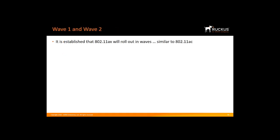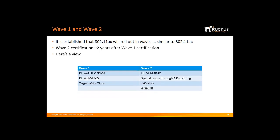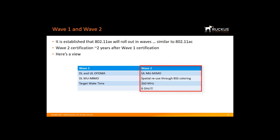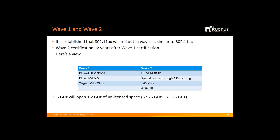802.11ax will roll out in waves similar to 802.11ac, with Wave 2 certification occurring 1–2 years after Wave 1. Wave 1 will include downlink and uplink OFDMA, downlink multi-user MIMO, and target wake time. Wave 2 will include uplink multi-user MIMO, spatial reuse using BSS coloring, 160 MHz, and 6 GHz. The FCC is still finalizing the release of the 6 GHz unlicensed spectrum, which will open up 1.2 GHz of unlicensed space in the 5.925 to 7.125 GHz range.